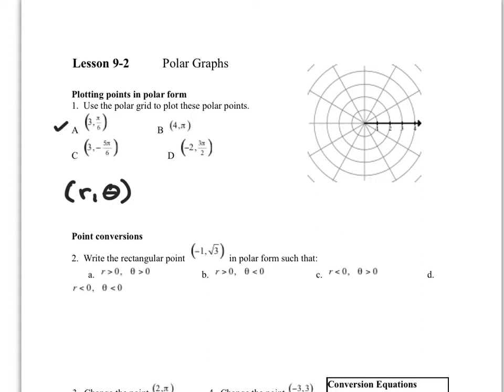For instance, if we look at point A, that tells me I'm going to go to pi over 6 — that's the angle value I want. So I whip around the circle to pi over 6, and then go out a radial distance of 3. Plotting that point, I go to pi over 6 and count out 3 units. That is point A.